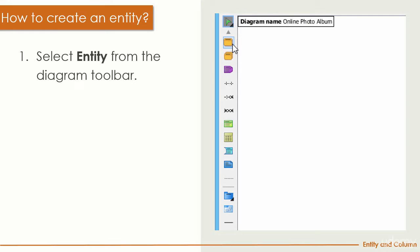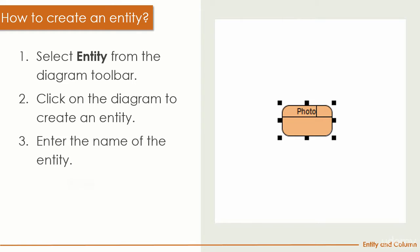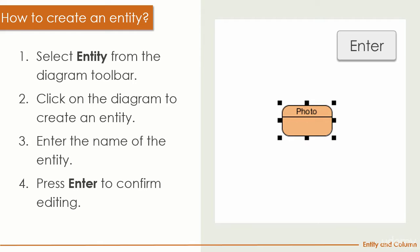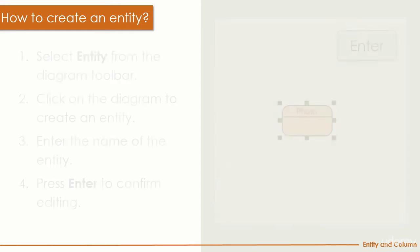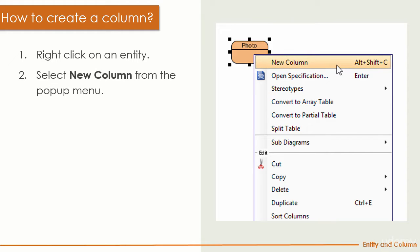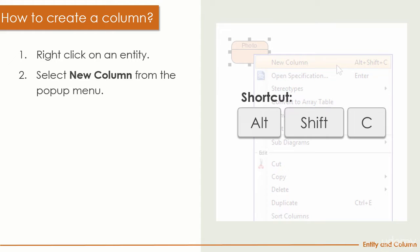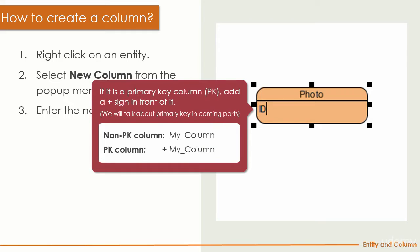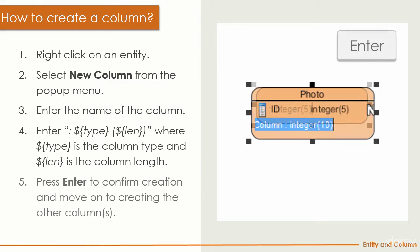To create an entity, select the entity from the toolbar, create it on the diagram, and give it a name. Hit Enter to confirm. Then to create a column, right-click on the entity, select New Column, or use the shortcut key Alt+Shift+C. Enter the name and type you want, and if you want to define a column as a primary key, add a plus sign at the beginning, then specify the type and length.